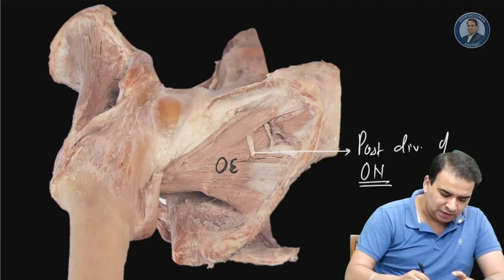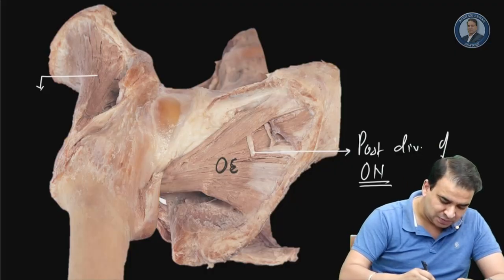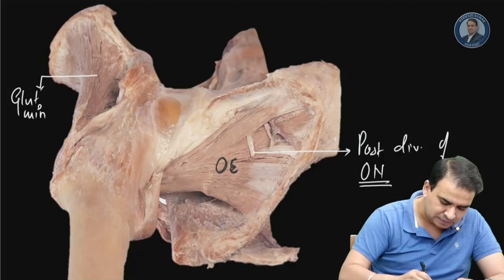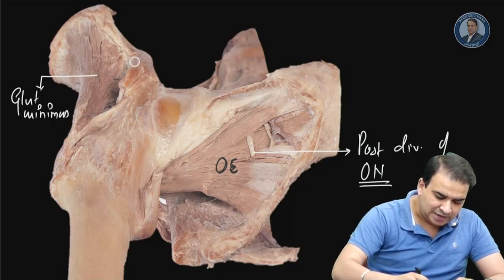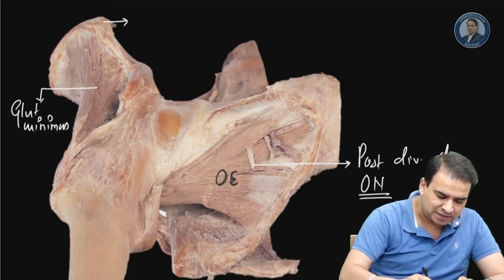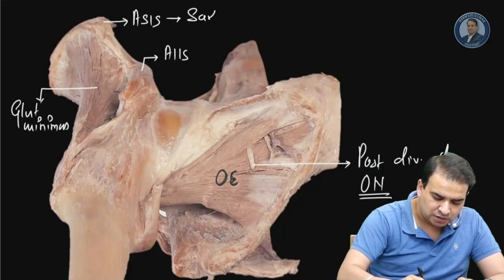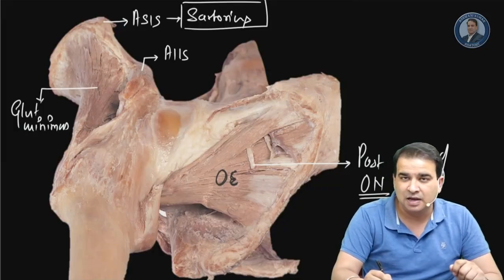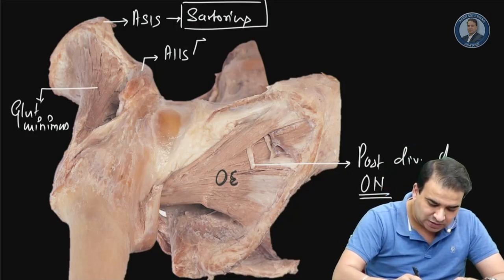On the more superior aspect, this is the iliac bone, and the muscle on the outer aspect - the gluteal surface of the hip bone - is the gluteus minimus muscle. Looking at the anterior border of the iliac bone, there are two elevations: the anterior superior iliac spine, which is the origin of sartorius, the longest muscle of the body, and the anterior inferior iliac spine, which has two important attachments: the rectus femoris muscle and the iliofemoral ligament.